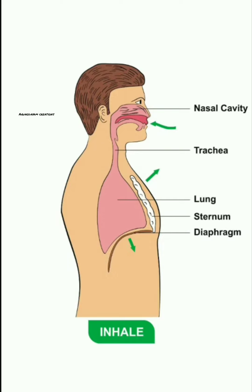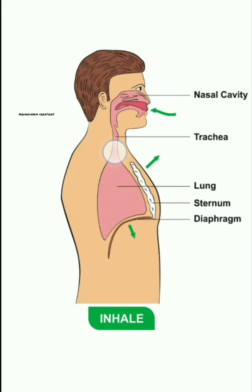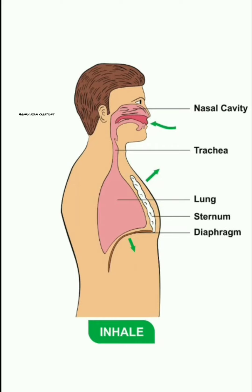So during inhalation and exhalation, lungs take the help of chest wall muscles and this flattened muscle called the diaphragm. This diaphragm is like a floor of the chest cavity. If we consider the chest cavity as a room, the diaphragm is like its floor. So during inhalation,